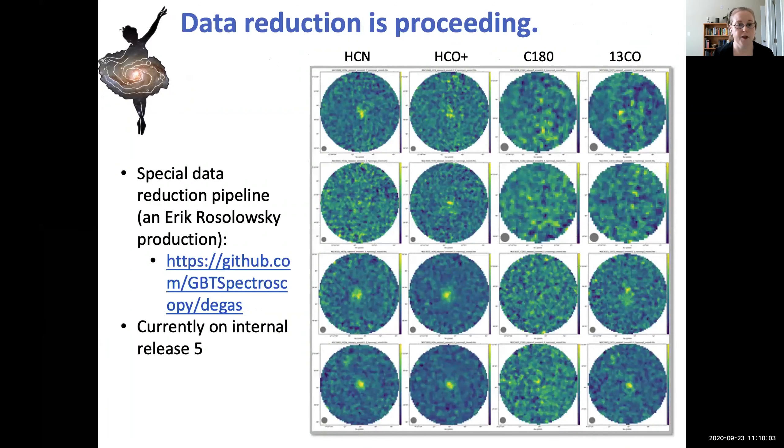Part of the fun of this project has been that we have had to develop our own data reduction pipeline. This is an Eric Rosalowski production. Why we needed to do this is that Argus, unlike all the other receivers on the GBT practically, is calibrated by a vane. And so we had to add that in as a way to calibrate our data. We're also doing some fairly fancy baselining tricks at this point using CO priors to really beat those baselines down.